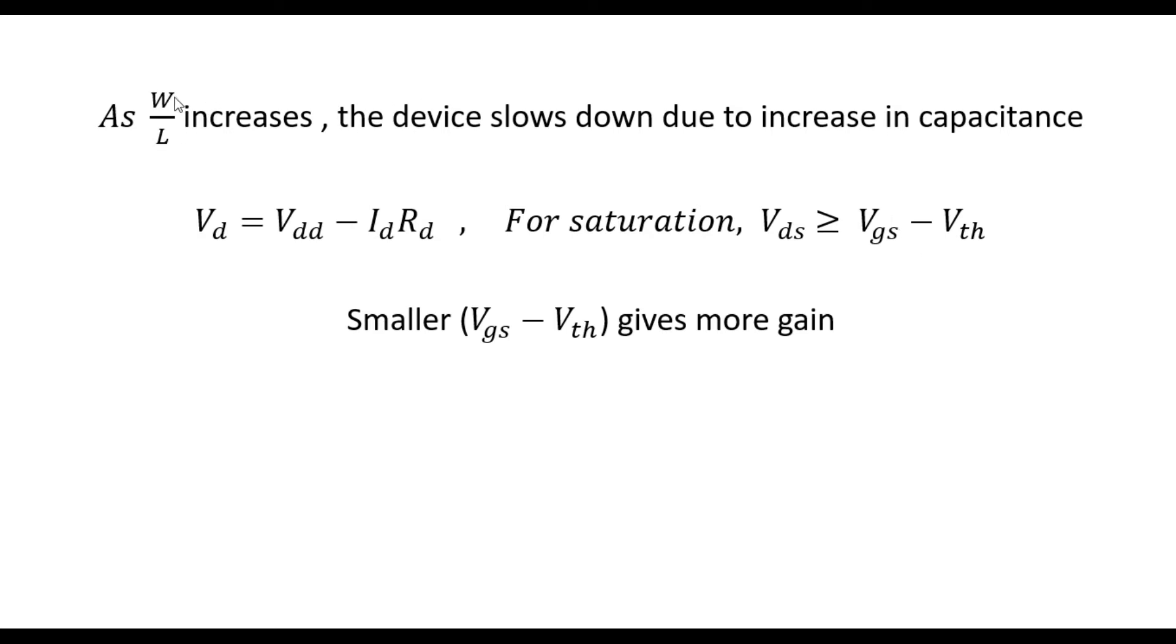So what is happening over there? This equation says VD is equal to VDD minus ID·RD. And ID is proportional to this W by L ratio. As W by L increases, the ID increases, so the VD decreases. But VDS is same as VD because that is grounded, so it becomes lesser and lesser. So what happens is the device enters the triode region; it no longer stays in saturation region.